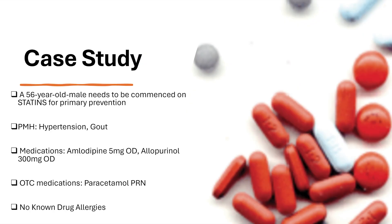Looking at the first case study, there is a 56-year-old male who needs to be started on statins for primary prevention. Primary prevention is preventing any cardiovascular diseases before they have happened. A patient needs to be started on primary prevention because of their risk factors, for example family history of premature coronary heart disease, smoking, or hypertension.